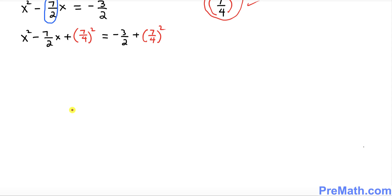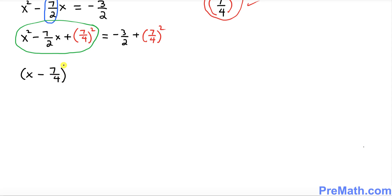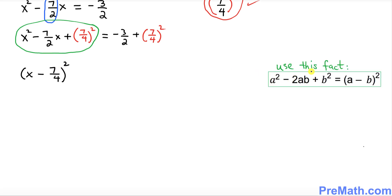Focus on the left hand side only — this represents a complete square of X minus 7 over 4, all squared. We used the well-known identity: a squared minus 2ab plus b squared equals a minus b squared. So the left side becomes X minus 7 over 4 squared.